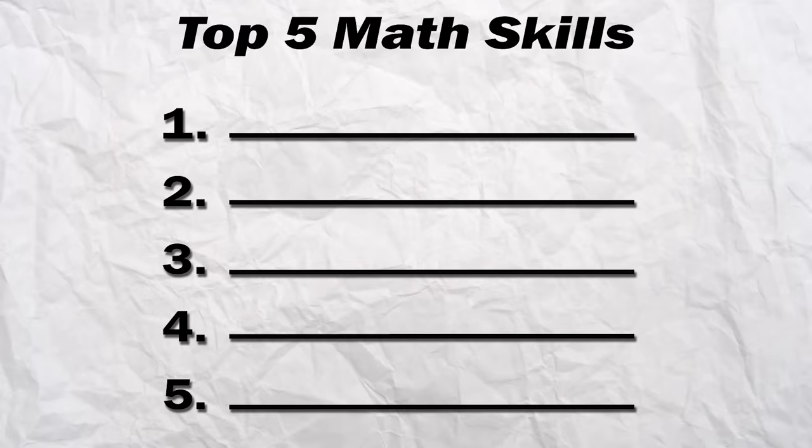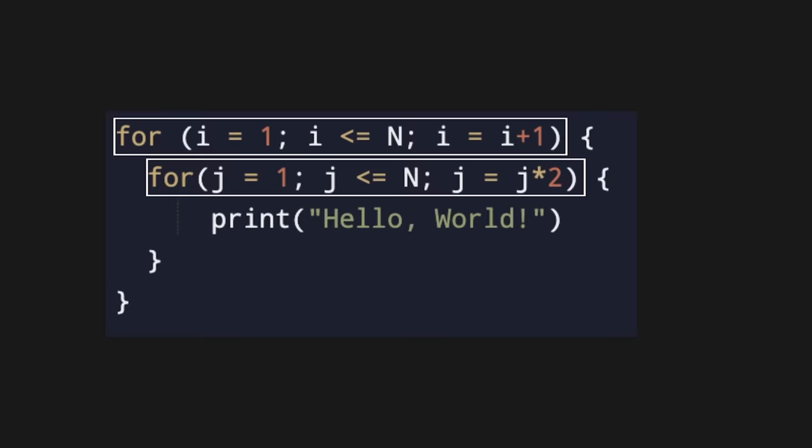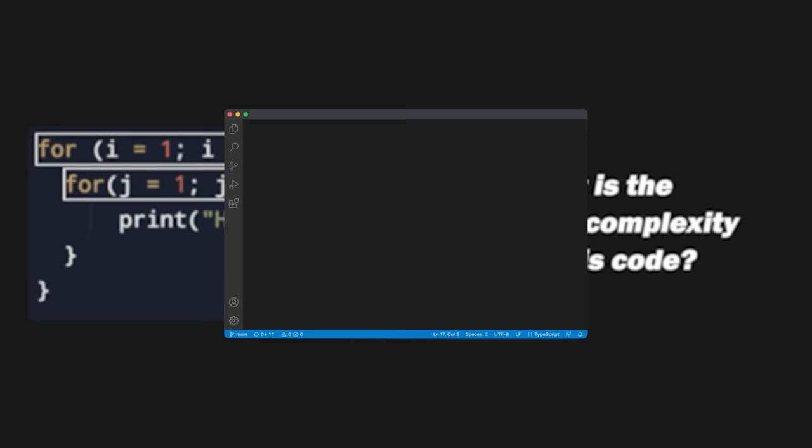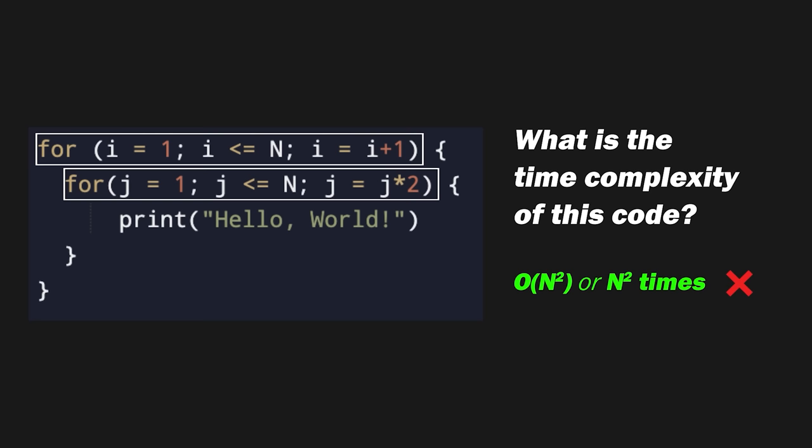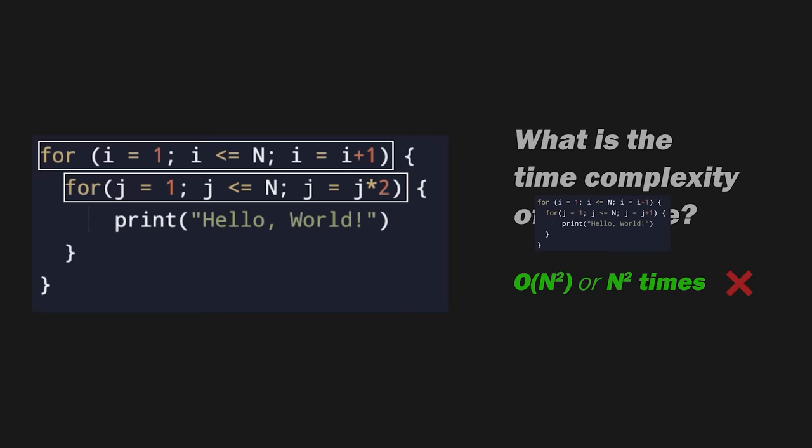To learn the first concept, we need to start with an exercise. Here is a piece of code that contains a for loop nested inside another for loop. What is the time complexity of this code? In other words, how many times will this code print hello world for any arbitrary value of n? This video is going to be interactive, so you can pause the video and leave the answer in the comments. If your answer is order n² or n² times, then you are going to benefit a lot from what I am about to tell you. Most of the people who answer n² do it because they confuse the code I gave you with this other piece of code.